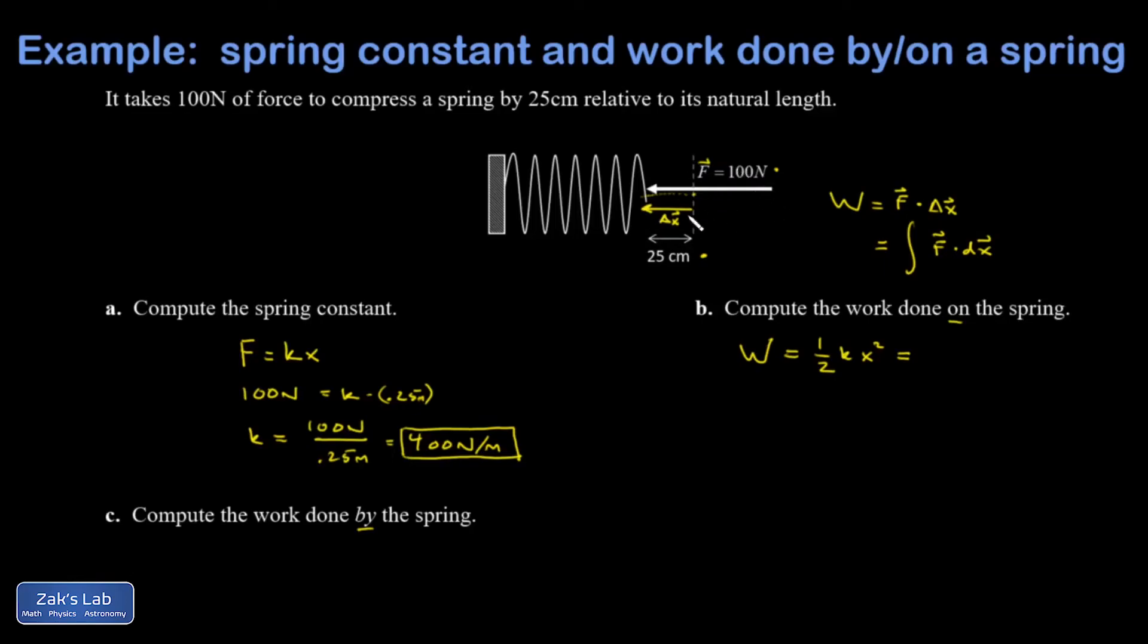With force and displacement in the same direction at all times during the compression, I know this comes out positive, so I'm going to emphasize that by writing a plus. My spring constant is 400. My total compression is 0.25 meters, and I'm going to square that.